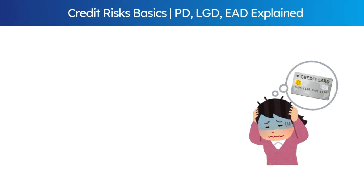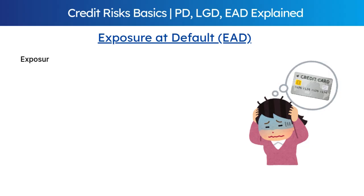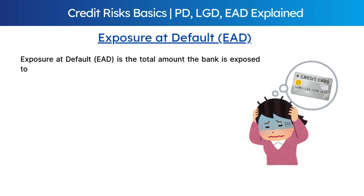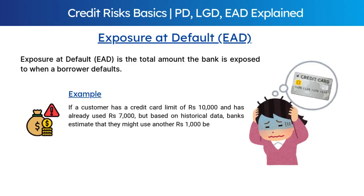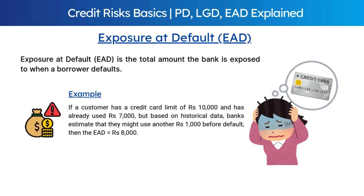Moving on to our third component — exposure at default. EAD is the total amount the bank is exposed to when a borrower defaults. It is crucial because many loans don't have a fixed outstanding balance; borrowers can withdraw more money from credit lines or overdrafts, increasing total exposure. For example, if a customer has a credit card limit of Rs. 10,000 and has already used Rs. 7,000, but based on historical data banks estimate they might use another Rs. 1,000 before default, the total EAD is Rs. 8,000.